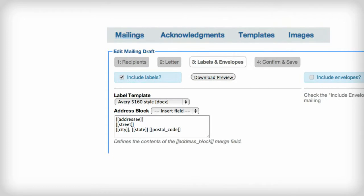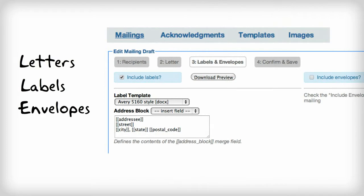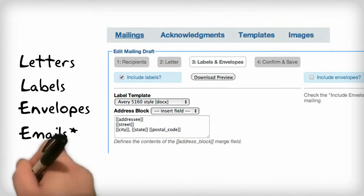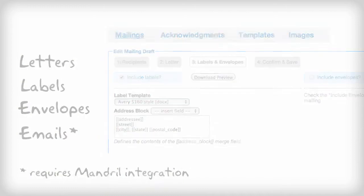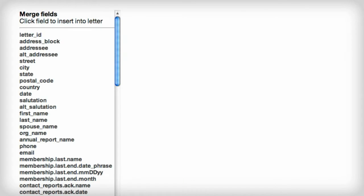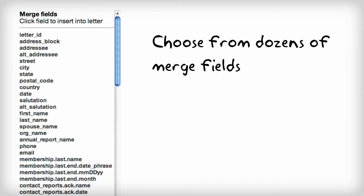LGL offers you the ability to produce mail-merged letters, labels, envelopes, and emails using either our simple text editor or by uploading a pre-formatted Word document. With either option, you can insert a variety of merge fields to personalize your letters, acknowledgments, or emails.